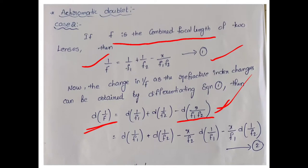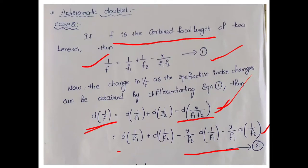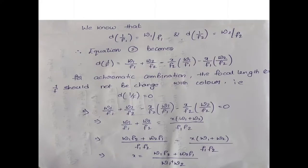Applying the product rule — u·v' + v·u' — where x is constant, u = 1/f1 and v = 1/f2: the differentiation of x/(f1·f2) gives x/f2 · d(1/f1) + x/f1 · d(1/f2). We know that d(1/f1) = ω1/f1 and d(1/f2) = ω2/f2. Substituting these dispersive power values into equation 2: